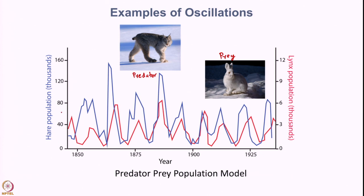On the left axis you can observe that the hare population ranges from 40 to 160, whereas the Lynx population is roughly from 0 to 12. So very few predators are needed and the prey population is usually very large.